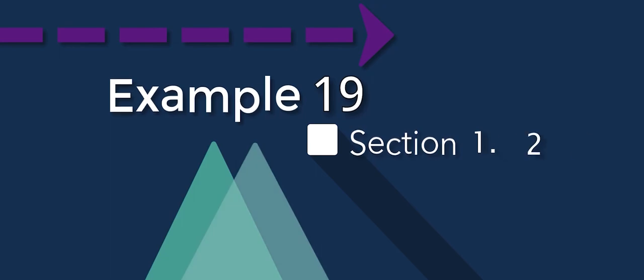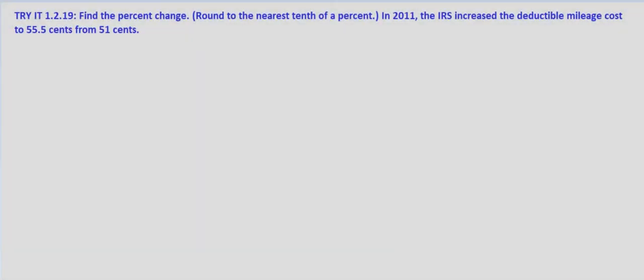Now we're looking at percent change and we're told to round to the nearest tenth of a percent. We're given in 2011 the IRS increased the deductible mileage cost to 55.5 cents from 51 cents. So what are we looking for? We are looking for the percent change from 51 cents to 55.5 cents.